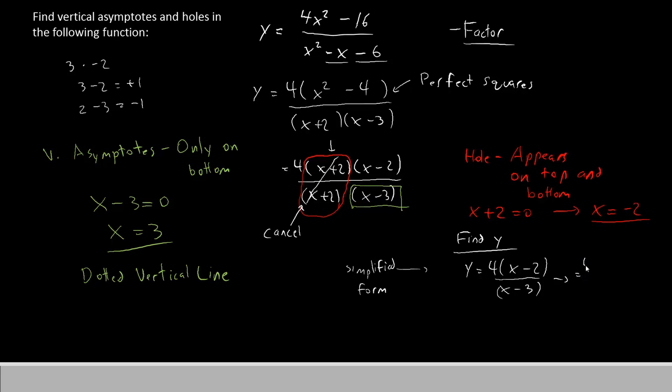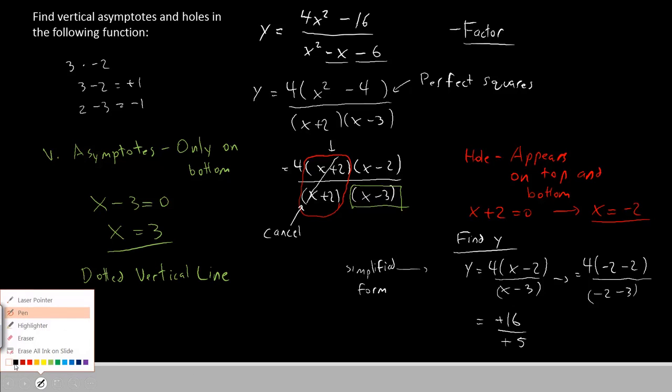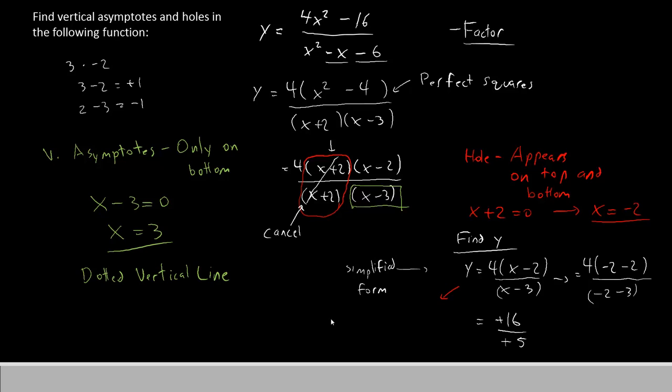So our result will be 4 times negative 2 minus 2 over negative 2 minus 3. If we do the math here, we have 4 times negative 2 minus 2 is negative 4. So on the top, we will have negative 16. And on the bottom, negative 2 minus 3 is negative 5. Since they're both negative, we'll just change both signs. So our final answer for the hole has to be written as an ordered pair of coordinates. We place the x first and then the y. The x was negative 2 and the y is 16 over 5.